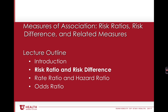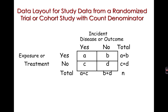Let's start with the risk ratio and risk difference. This shows the data layout for study data from a randomized trial or cohort study with a count denominator. You take all individuals in your study and classify them first as to exposure or treatment — yes exposed or no not exposed — and then as to whether they have the incident disease or outcome, yes or no. The count of individuals falling into each category becomes A, B, C, or D in this 2x2 table. The incidence in the exposed is A over A plus B, and the incidence in the unexposed is C over C plus D.